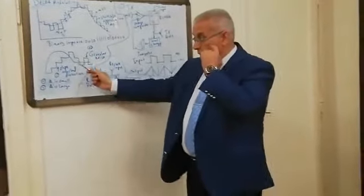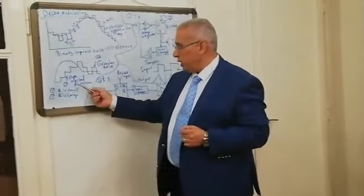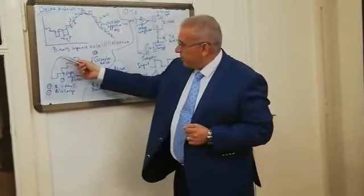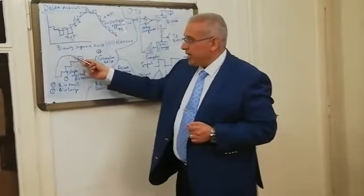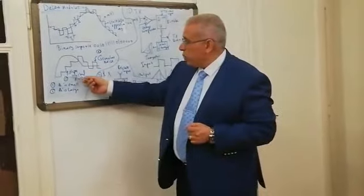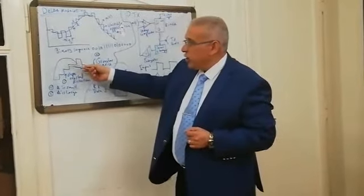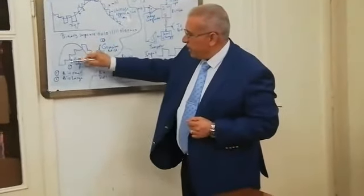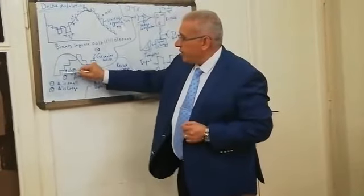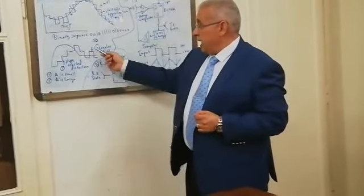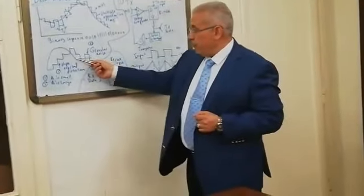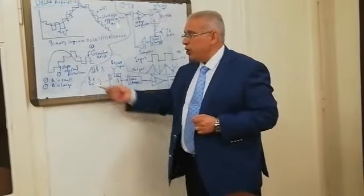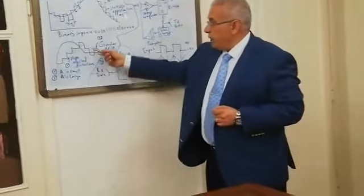As mentioned, the first problem is slope overload distortion. We can see that the input signal is changing faster than the output of the integrator, so delta is very small and cannot catch the rapid change of the input signal at that part. The second problem is granular noise: with a flat input signal, delta is large and changes without any corresponding change in the input signal. These are the two main problems we face with this technique.